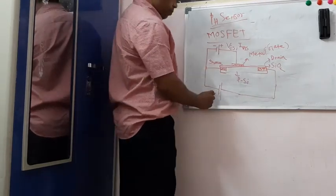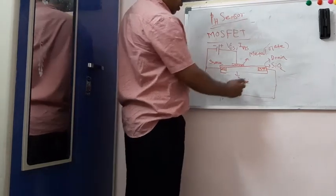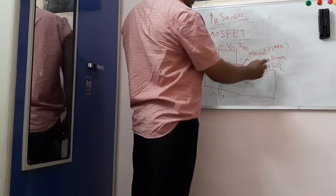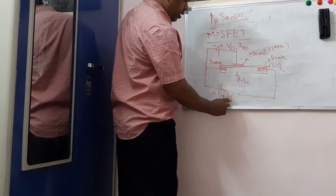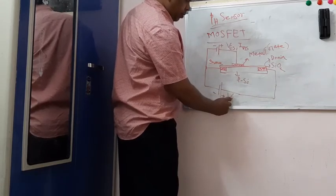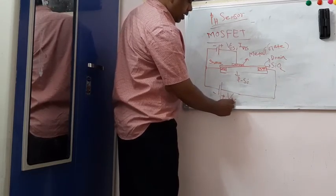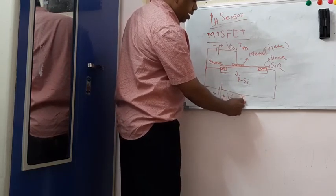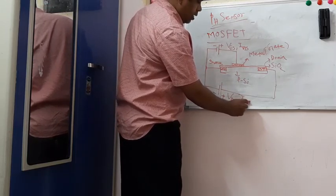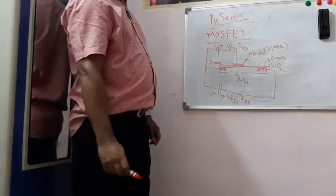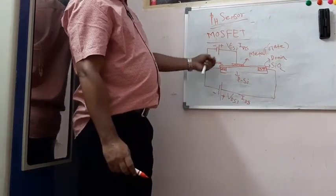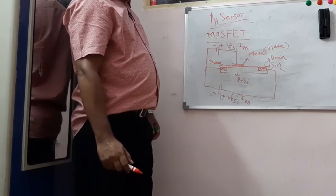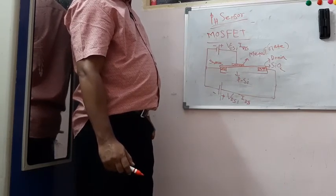So this potential difference between gate region and source is named as V suffix gate source, Vgs. And current flowing through it will be Igs. Similarly, potential difference between drain and source is said to be Vds, and current flow is said to be Ids. So this is the general schematic diagram of MOSFET.